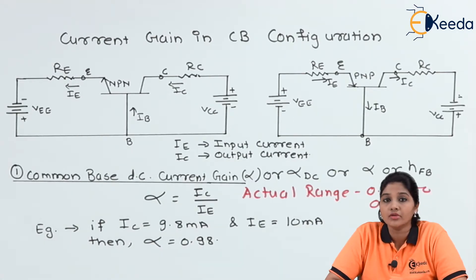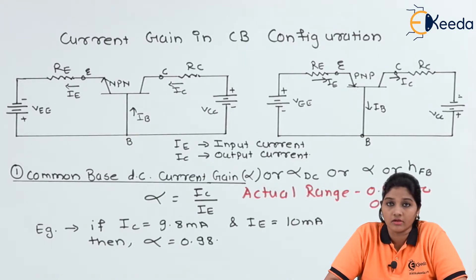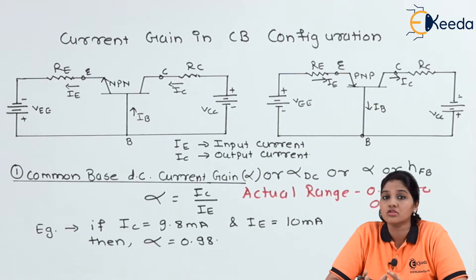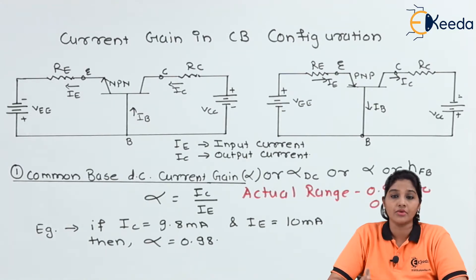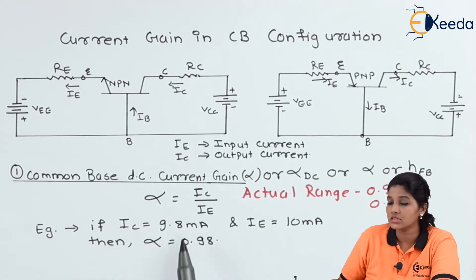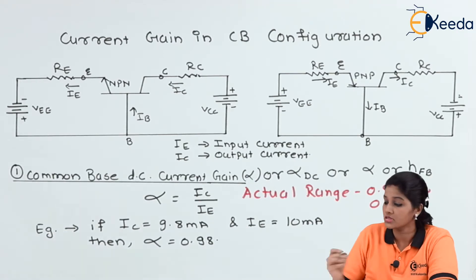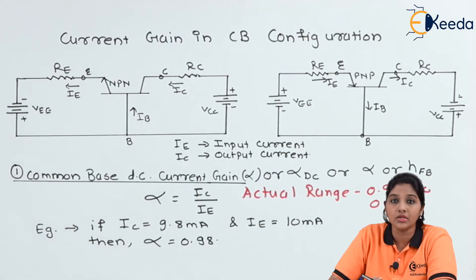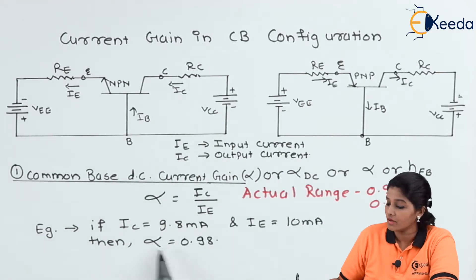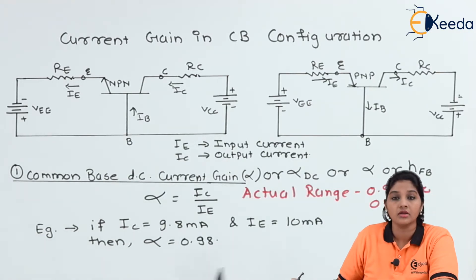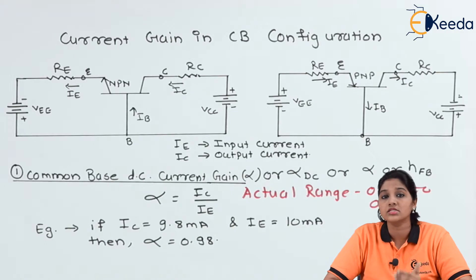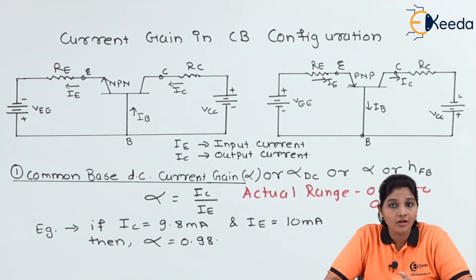We know that emitter current is nothing but the sum of base current and collector current, and the collector current is always less than the emitter current. For example, if IC equals 9.8 mA and IE equals 10 mA, then the value of alpha equals 0.98. This indicates that since the collector current is smaller than the emitter current, the value of alpha is always less than unity.